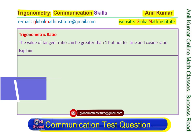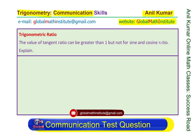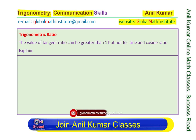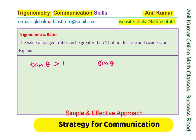The question here is: the value of the tangent ratio can be greater than 1, but not for sine and cosine ratios. Explain why. So we need to explain why tan of any angle theta can be greater than 1, but sine theta is not greater than 1, or even cos theta is not greater than 1. That is the question which we need to answer. I would like you to pause the video, answer the question, and then compare with my suggestions.